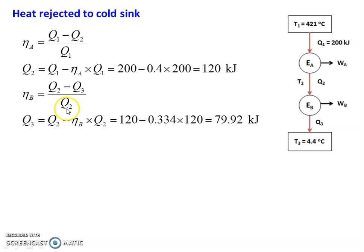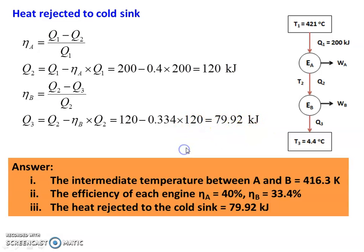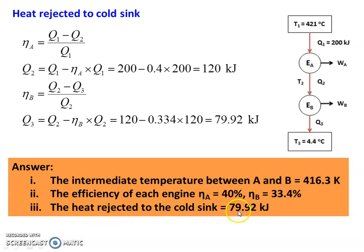Eta B equal to Q2 minus Q3 divided by Q2. Rearranging, Q3 equal to Q2 minus Eta B into Q2. So Q3 equal to 120 minus 0.334 into 120 equal to 79.92 kilojoules. The answers to the problem: intermediate temperature between A and B is 416.3 Kelvin, efficiency of each engine Eta A equal to 40% and Eta B equal to 33.4%, heat rejected to the cold sink is 79.92 kilojoules.